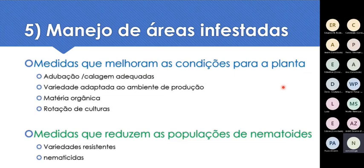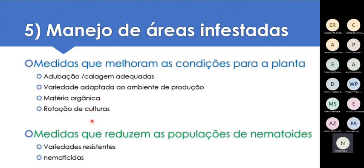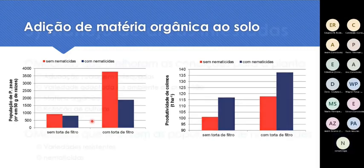Como fazer o manejo de áreas infestadas? Adotamos medidas que melhoram as condições para a planta — adubação, calagem bem feita, variedade adaptada ao meio de produção, matéria orgânica, rotação de culturas — e medidas que, de fato, reduzem as populações, que são variedades resistentes e nematicidas. As medidas do primeiro grupo ajudam as plantas, mas não controlam o nematóide. Variedades resistentes e nematicidas, esses sim controlam nematóides.